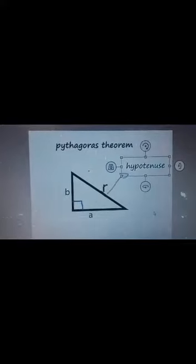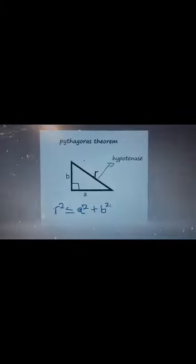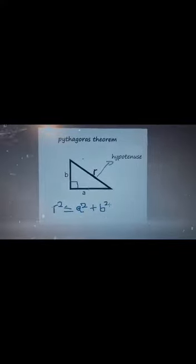Remember, this only holds true for a right triangle. So, for this triangle, we can say R squared is equal to A squared plus B squared.